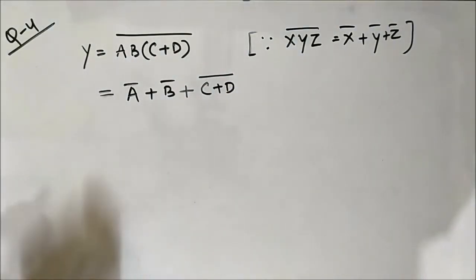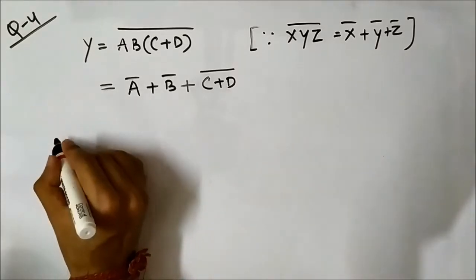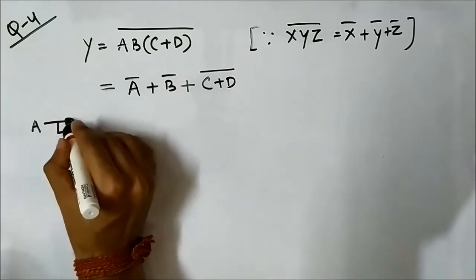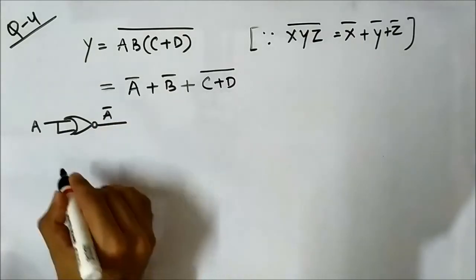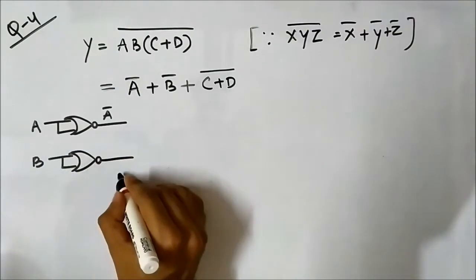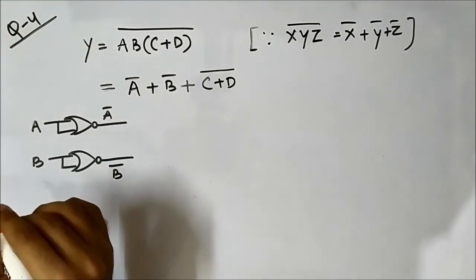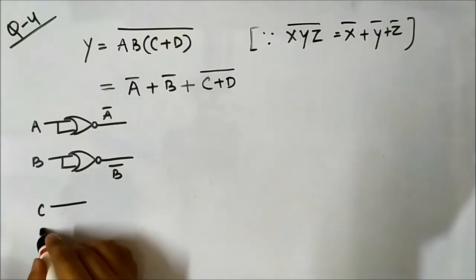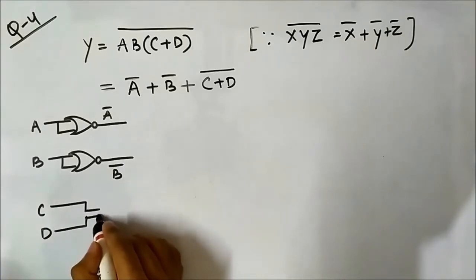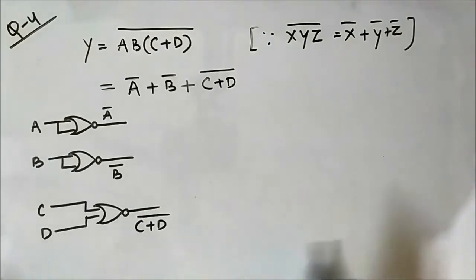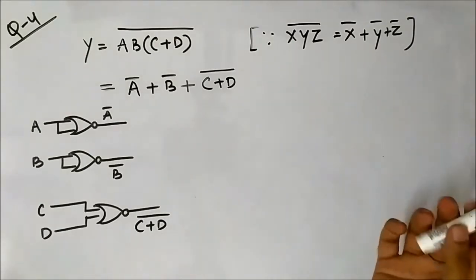Now we have the expression and we need to implement it using NOR gates. First we will have A complement, then we will have B complement, and then we need C or D complement. So we now have the three individual signals: A complement, B complement, and C plus D complement.